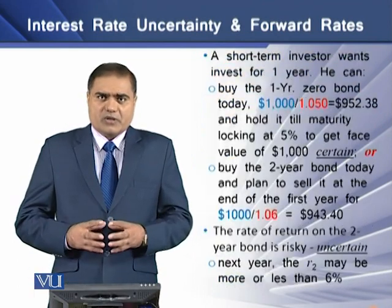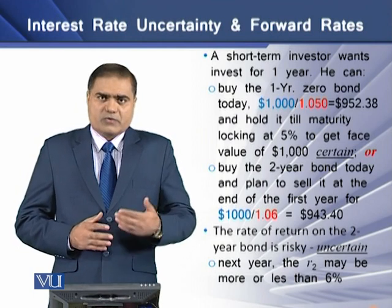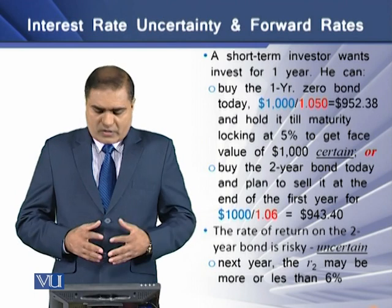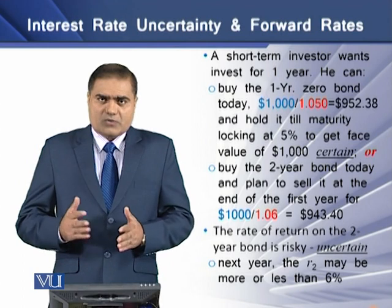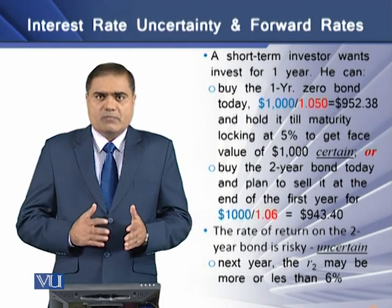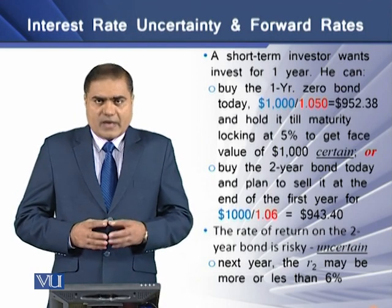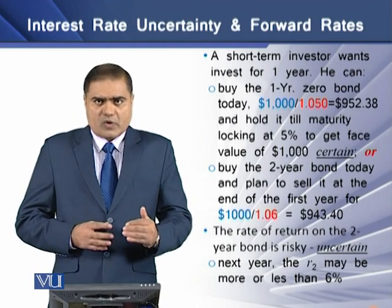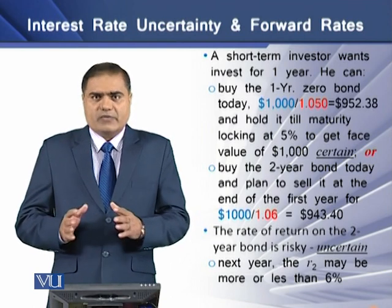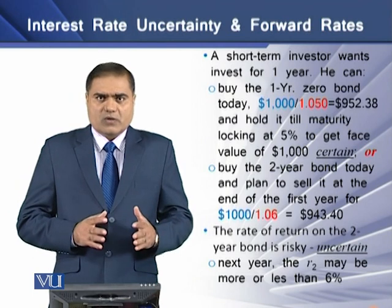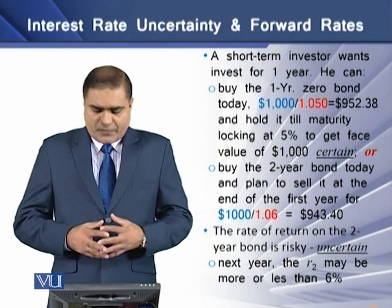Now, if a short-term investor wants to invest for 1 year, he may have two options. The first is to buy the 1-year zero bond today at a discount rate of 5 percent, meaning he will be buying the bond at 952.38 dollars and holding it till maturity, locking his return at 5 percent to receive the face value of 1000 dollars. That scenario prevails in the world of certainty.